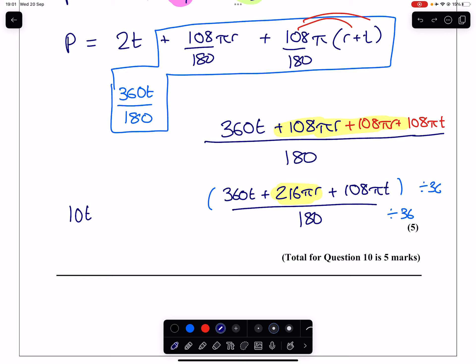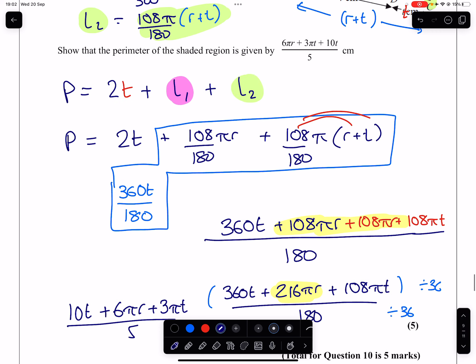216 divided by 36 is 6. So we end up with 6πR. And 108 divided by 36 is 3. So we're going to end up with 3πT. And that is all over 5. And that is exactly what we want.